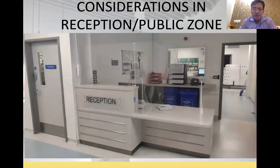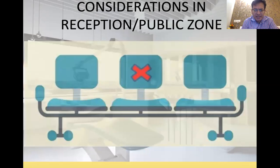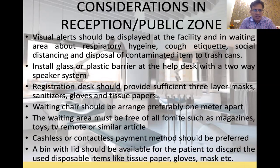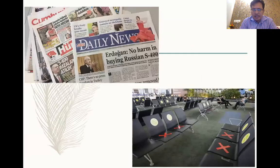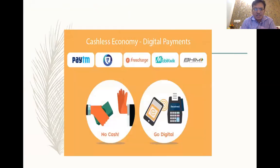Your reception needs to be clutter-free — remove all files and documents and go digital. Ensure that two patients sit six feet apart. Visual alerts as recommended by the WHO, such as cough etiquette posters, hygiene reminders, three-layer masks, sanitizers, and glove dispensers, must all be in place. Remove fomite sources like magazine stands from the waiting area. Cashless and digital payments are the mode to adopt.